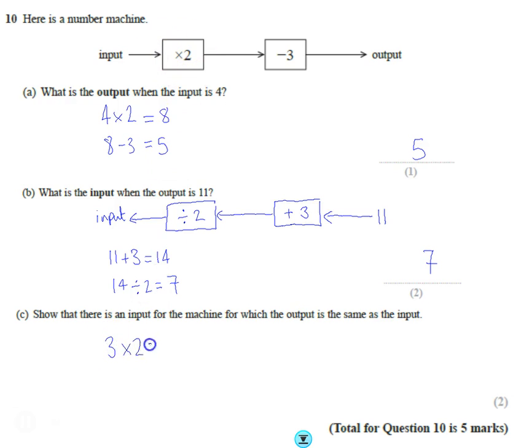If we put 3 in and we double it, we get 6. 6, take off 3, gets you back to your starting number 3. So the input and output must be 3, so 3 is the answer.